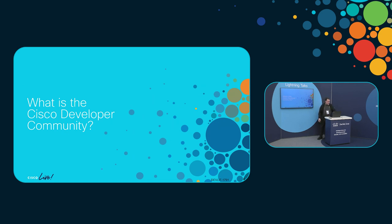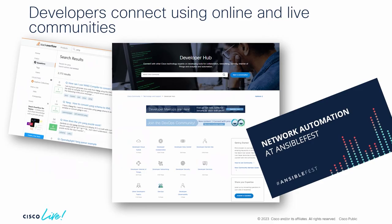What is the Cisco developer community? Developers love communities. We have GitHub with over 73 million developers using it, and Stack Overflow has over 14 million users. Our Cisco developer community has 50,000 unique visitors every month. We're not quite at the same level as Stack Overflow, but 50,000 is not too bad. Besides online communities, developers also love meeting up and doing social things, like meetups and conferences like this.